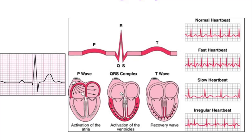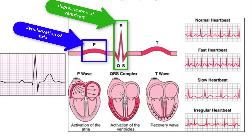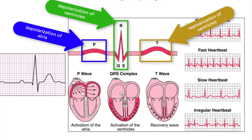The P wave of the graph represents depolarization of the atria in response to signals from the SA node. Next, the QRS complex shows depolarization of the ventricles from the AV node. Finally, the T wave represents repolarization of the ventricles, which completes the standard heartbeat.